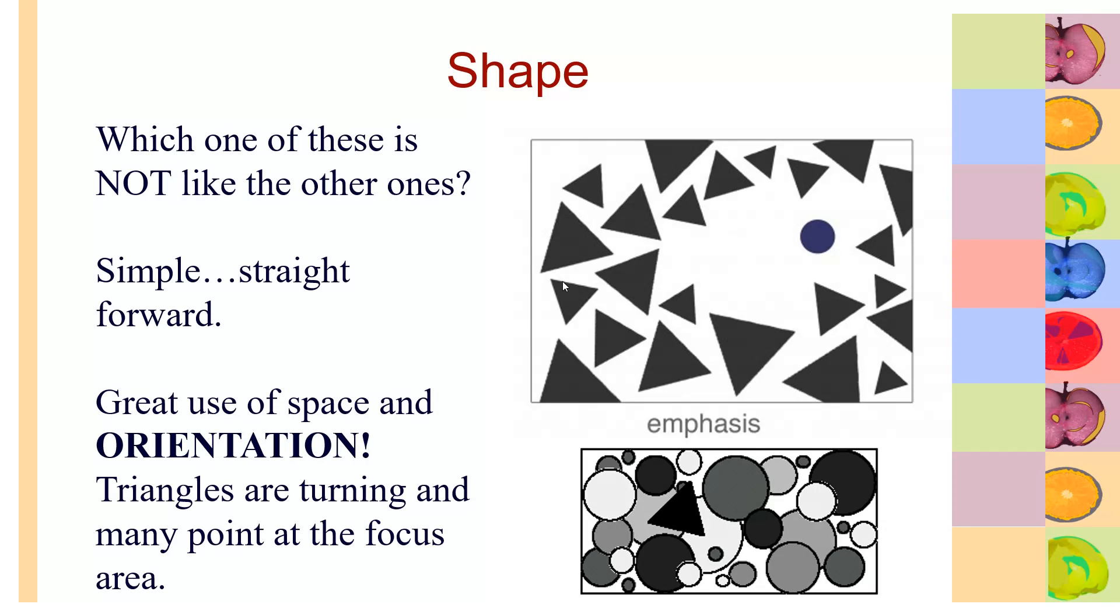Shapes. It's so easy to play with different shapes, but if you just make one shape different amongst many that are similar - again, which one of these is not like the other ones? Look there. Circle amongst all the triangles, or the triangle amongst all the circles. They're going to help us see what you want us to see. Dramatic differences.